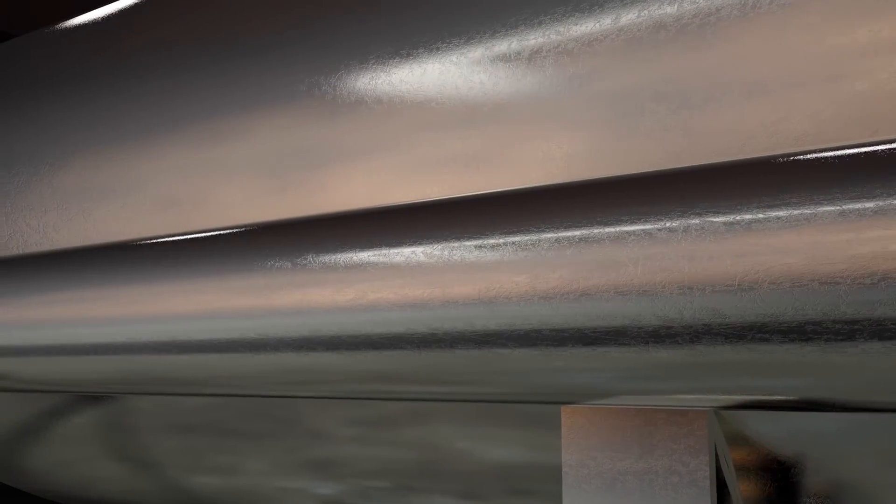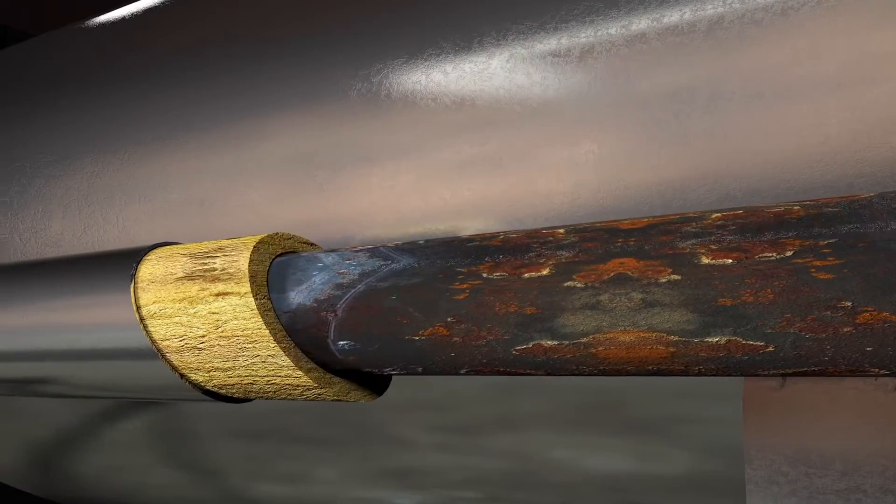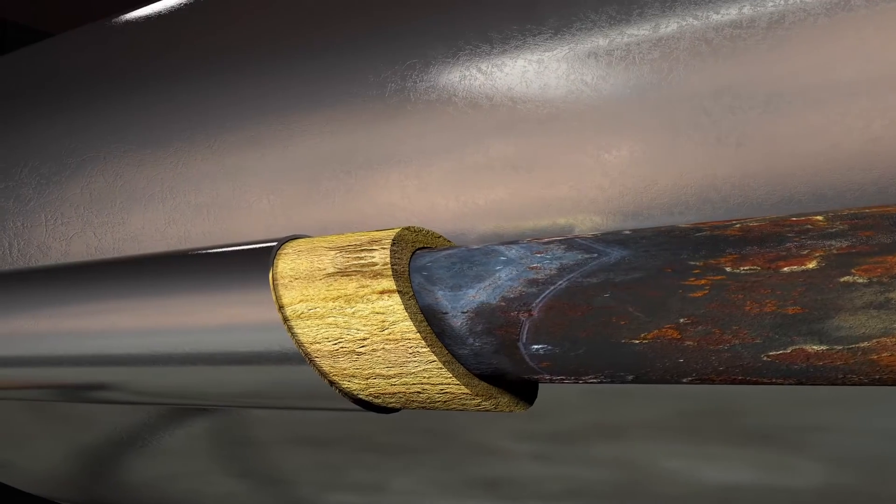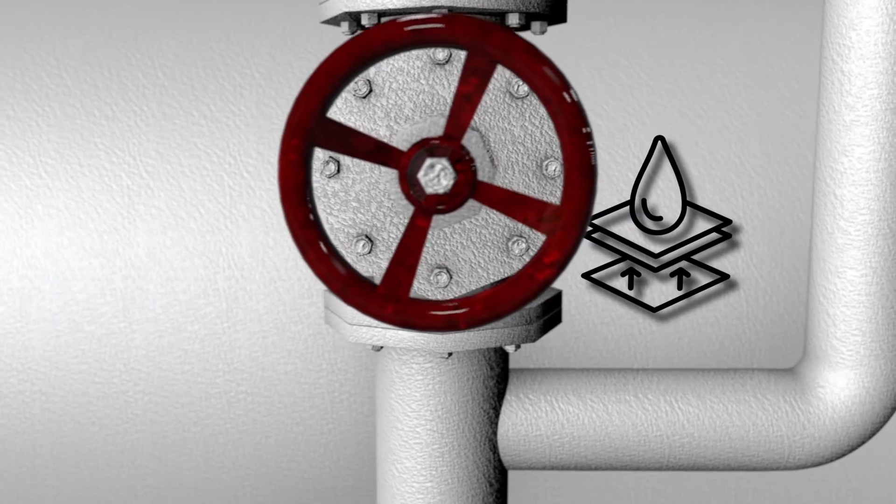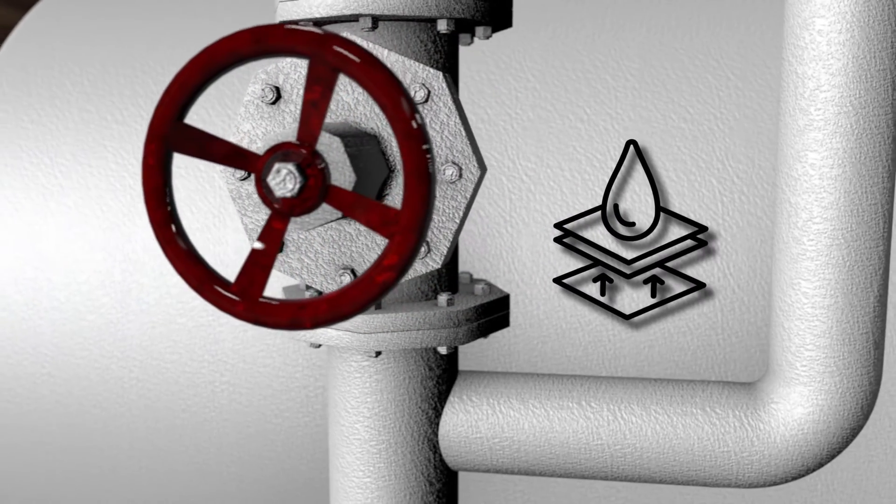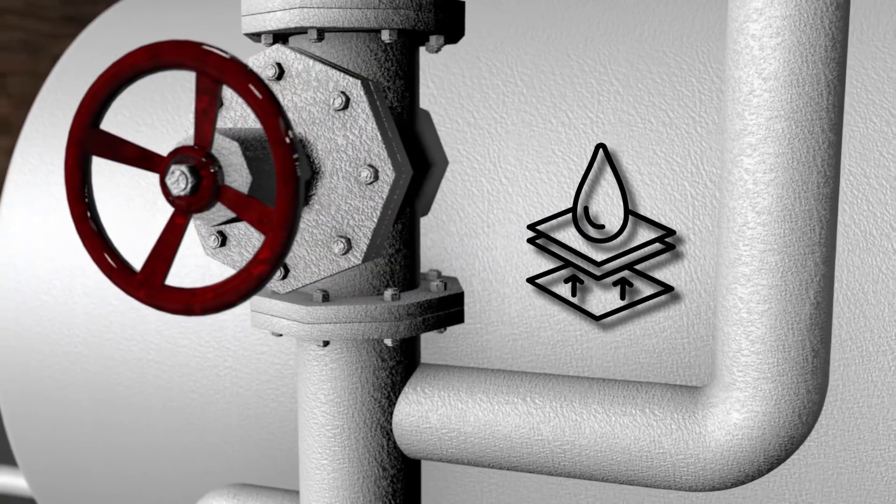But unlike foam, blankets, or mineral wool, where moisture can become trapped between layers causing damaging corrosion, Aerolan coating systems, including specialized primers and topcoats, create a durable, tightly bonded seal that protects substrates and resists corrosion under insulation.